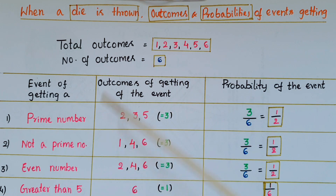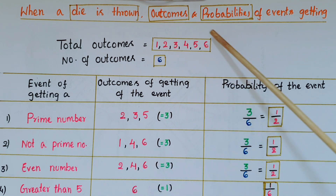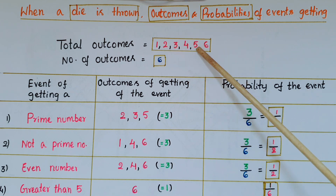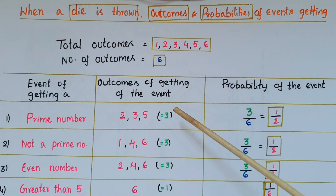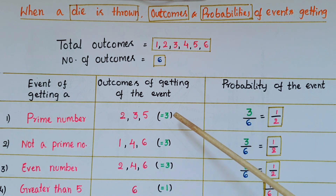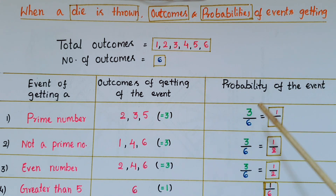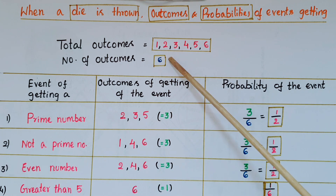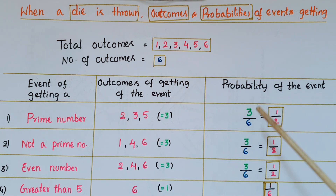The first event is getting a prime number. We know that out of these outcomes, the prime numbers are 2, 3, and 5. So total outcomes of getting this prime number event are 3. So probability of the event of getting a prime number is 3 by 6, where 3 is the favorable outcomes and 6 is the total number of outcomes. So 3 by 6 is 1 by 2.